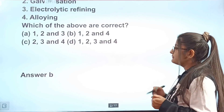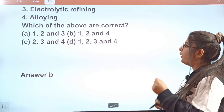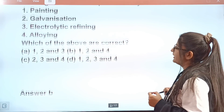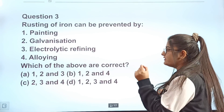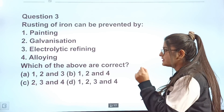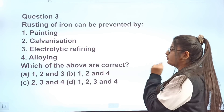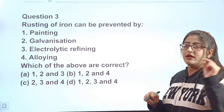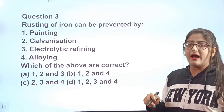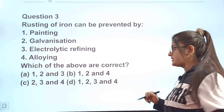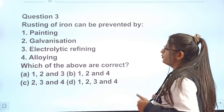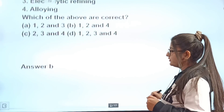The correct answer is B — painting, galvanization, and alloying. These methods can prevent iron from rusting. Let's move on to our next question.